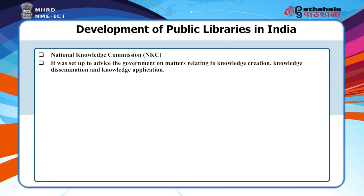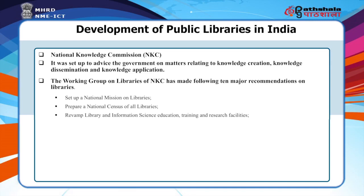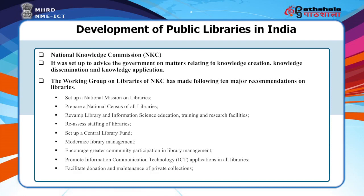National Knowledge Commission was set up to advise the government of India on matters relating to knowledge creation, dissemination and application. Its working group on libraries made ten major recommendations: set up a national mission on libraries; prepare a national census of all libraries; revamp library and information science education, training and research; reassess staffing of libraries; set up a central library fund; modernize library management; encourage greater community participation; promote ICT application in all libraries; facilitate donations and maintenance of private collections; and encourage public-private partnership in development of library and information services.